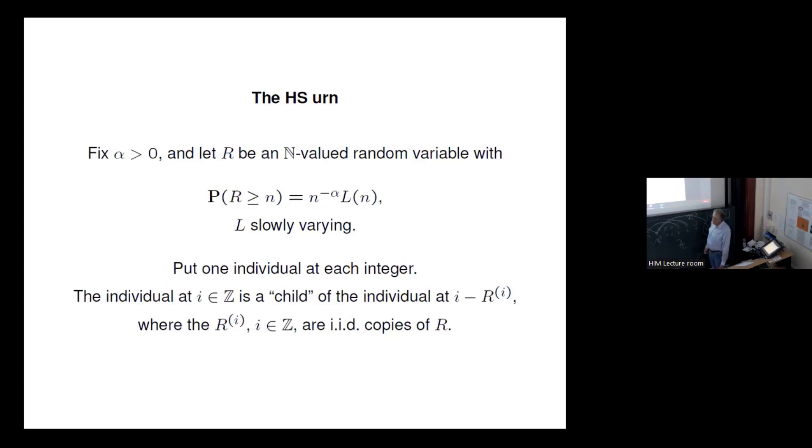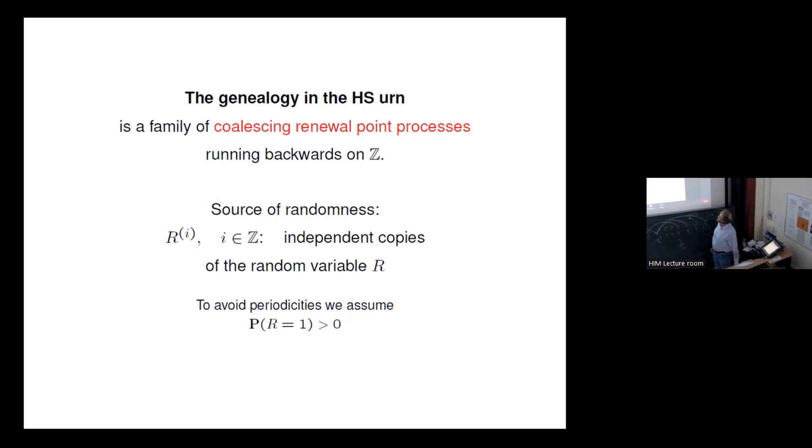Okay, what is the Hammond-Sheffield urn to wrap up? We have here this kind of random graph and the genealogy is a family of coalescing renewal processes running backwards on the integers. And to avoid periodicities, we assume that R puts mass on one or more generally we could assume that R is aperiodic, has a support with greatest common divisor one.